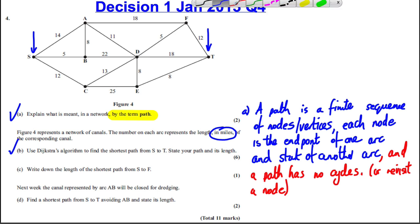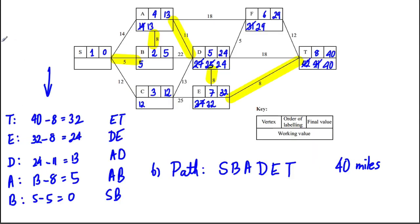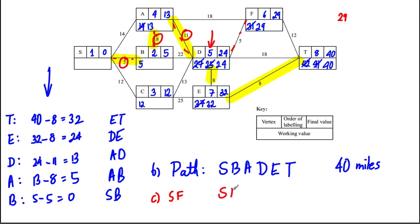Part C asks for the length of the shortest path from S to F. We can work this out by trial and error. The shortest path to D is via S→B→A→D: 5 + 8 + 11 = 24. Adding DF (5) gives 29. The other option — 14 + 18 = 32 — is more. So S → B → A → D → F = 29 miles. Nothing going via C or elsewhere can beat this, since you'd have to go through D anyway and 24 is the shortest distance to D.